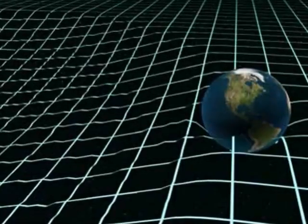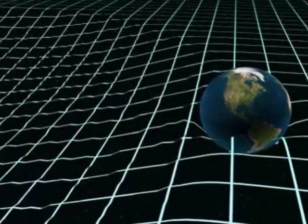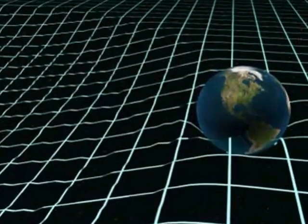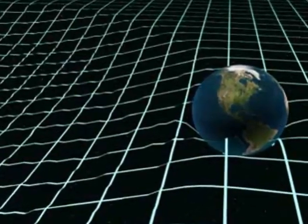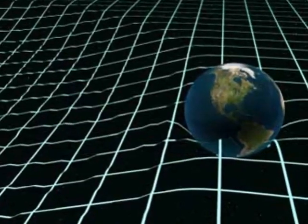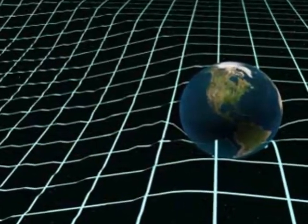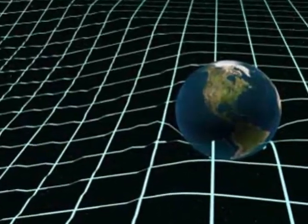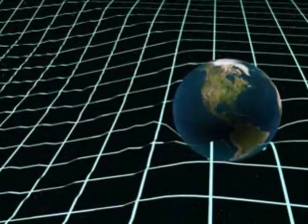Predicted in Einstein's General Theory of Relativity, gravitational waves are disturbances in the curvature of spacetime caused by the motions of matter. Propagating at or near the speed of light, gravitational waves don't really travel through spacetime — it's the fabric of spacetime itself that's oscillating.